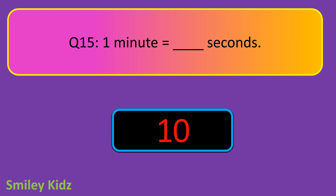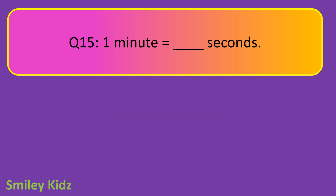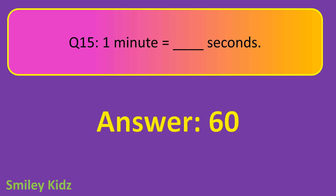Question number 15. One minute is equal to dash seconds. Your time starts now. And your time is up. The right answer is 60. One minute is equal to 60 seconds.